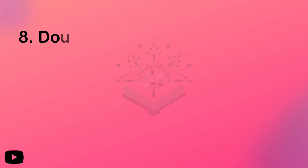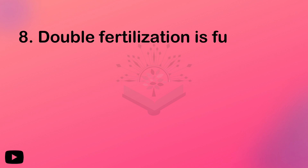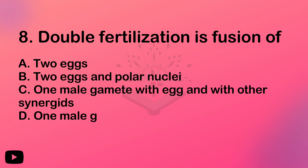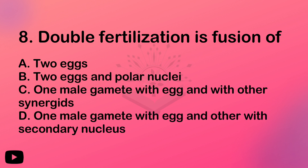Next question: double fertilization is the fusion of two male gametes — one male gamete with the egg and the other with the secondary nucleus. We have two fertilizations, two fusions. We have two male gametes.